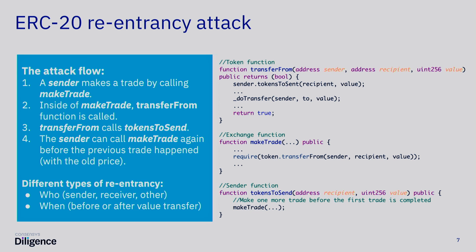The most tricky and interesting attack I see in ERC20 is re-entrancy. Just to remind what re-entrancy is — this is an example for tokens. You see three functions: transfer from, make trade, and token to send, located in different contracts. The attack flow is simple — this is an exchange example. The sender makes a trade by calling the make trade function of the exchange. Inside of it, a token transfer happens. If this is ERC777, there is a callback function to the sender. After that, the sender can make one more trade by calling the make trade function of the exchange. Basically, you can make one more trade before the first trade is finished, and you can do it with an old price, for example if it's automated pricing, or do a lot of things that are not intended.